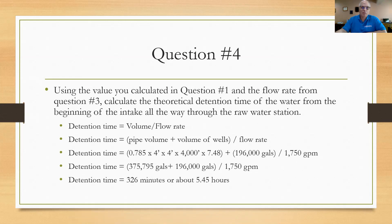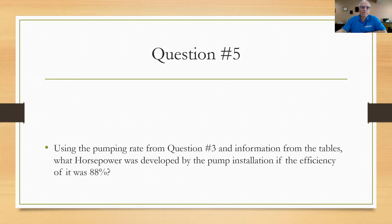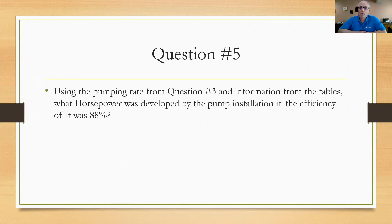All right, let's move on to the last question, question number five. Using the pumping rate from question number three and information from the tables, what horsepower was developed by the pump installation if the efficiency of it was 88 percent? This is a standard horsepower problem. We've gone over a few of these for the other plant. Let's try Bacon Road horsepower. When you're going to use this formula for horsepower: gallons per minute times the head divided by 3,960 times the efficiency. And if you want to know a little bit about horsepower, remember to go back and check out some of the other videos we've put online that explain hydraulics and horsepower and the basic math videos that we've put up, which you can find at the end of this presentation, a link to some of those channels.